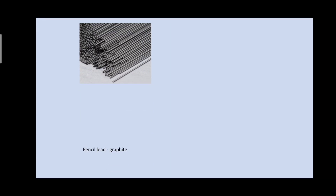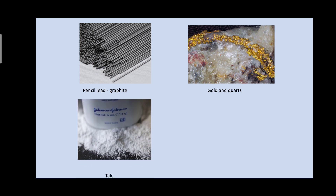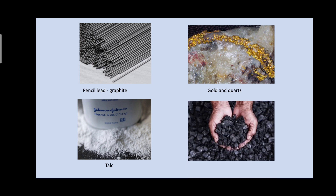The first one is graphite — your pencil lead is made of graphite. The second one is gold and quartz. The third one is talc, which you usually see in the talcum powders that you apply. The fourth one is coal. These are very commonly found minerals which we see and hear about in our daily lives. I hope you got all of them right.